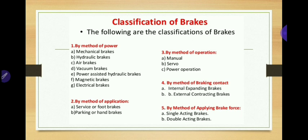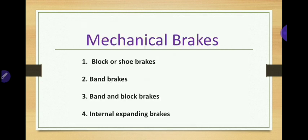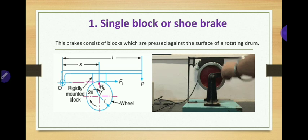Our aim in the Theory of Machines subject is to study mechanical brakes mainly. Therefore we are going to study four types of mechanical brakes in detail: first, block or shoe brake; second, band brake; third, band and block brake; fourth, internal expanding brakes. Let us start with the first type, the single block or shoe brake.